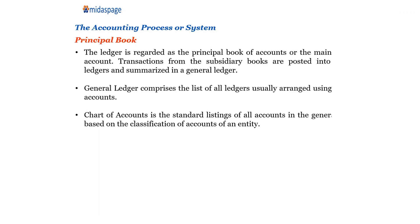The third step is: what is the principal book? The ledger is regarded as the principal book of accounts, or the main book of accounts. Transactions from the subsidiary books are posted into specific ledgers and summarized in a general ledger.